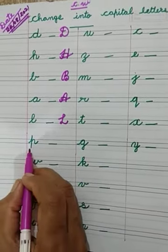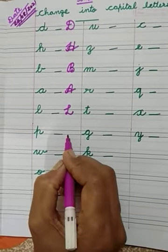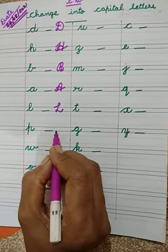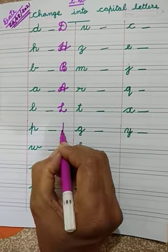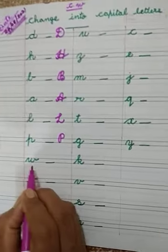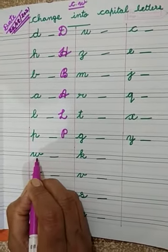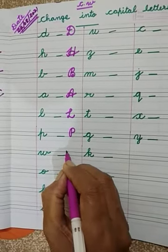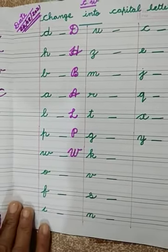Which letter is this? Cursive Small letter P. What we have to do is, we have to write here Cursive Capitalities P. Start from the first line. In this way, you have to write here Cursive Capitalities, Capital letter P. This is Cursive Small letter W. Capital letter W — start from the second line. This is Cursive Capitalities, Capital letter W.